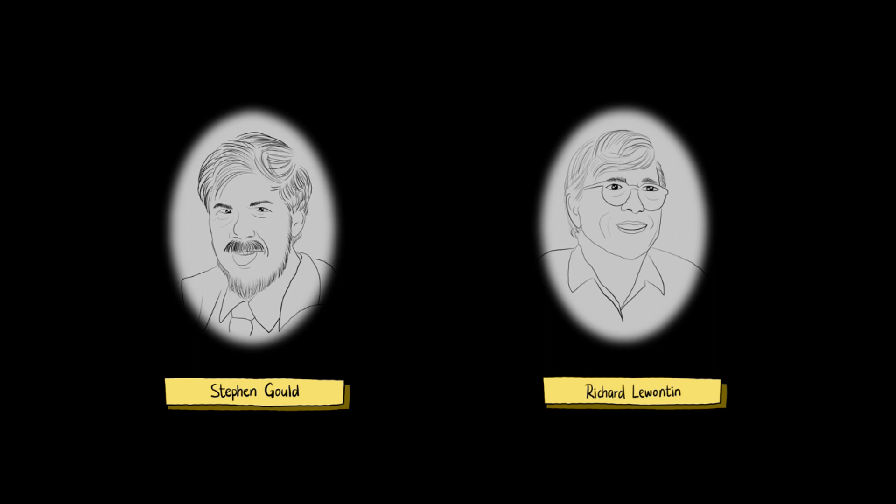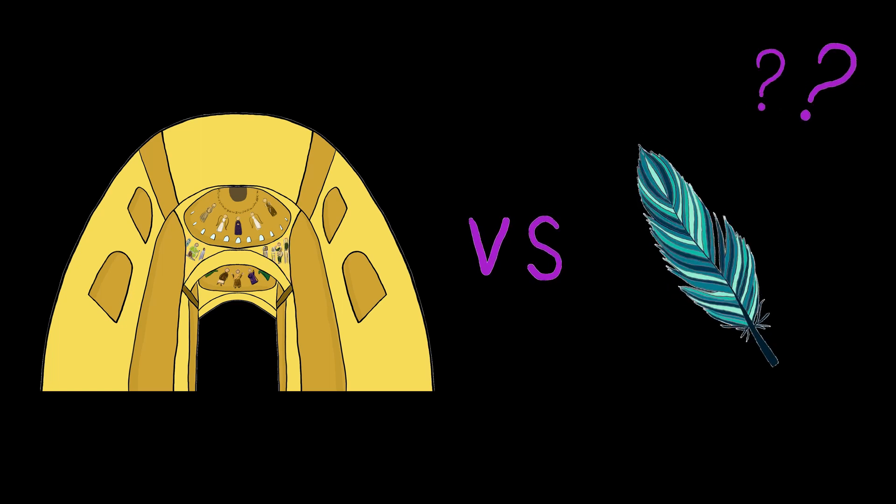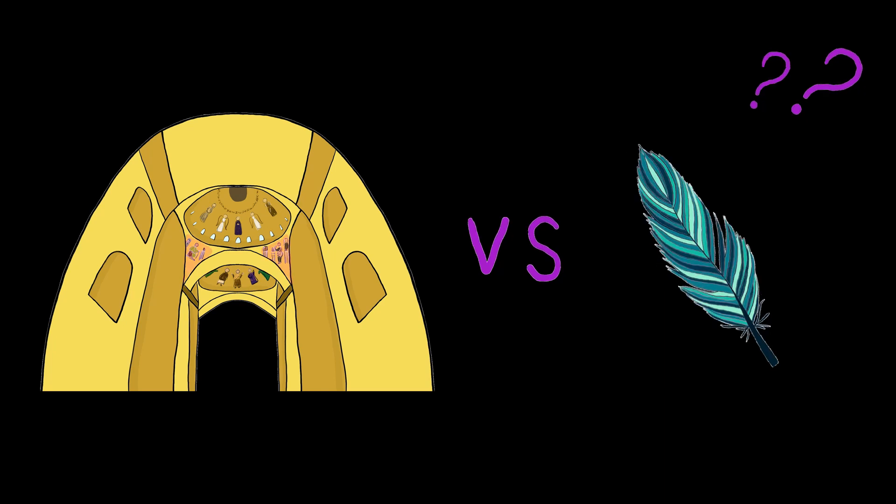Let me start by asking you a question. What is common between spandrels and feathers? Spandrels are triangular segments situated between the arches and under the domes of structures such as cathedrals. I'll let you ponder on that for a while and hopefully the answer may become clear in the next few minutes.